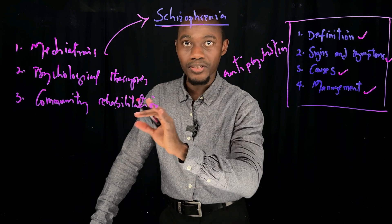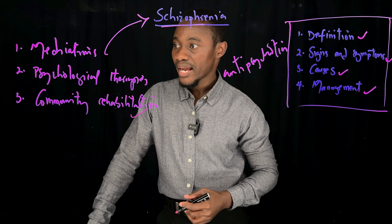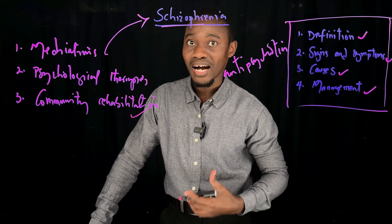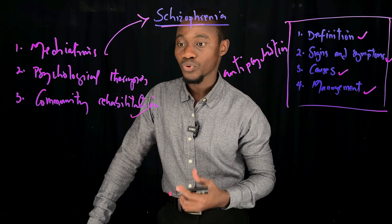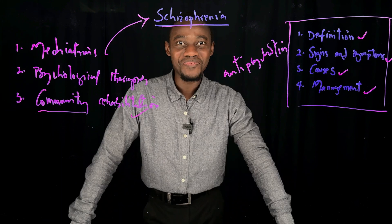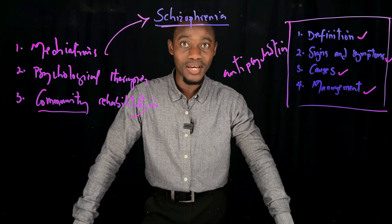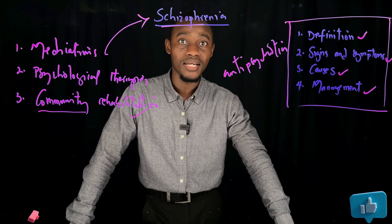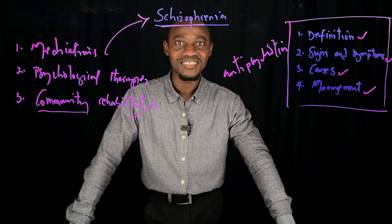Last but not least is community rehabilitation, which involves programs aimed at helping the individual understand the presence of the condition, how it affects their activities of daily living, and helping them make adjustments to reintegrate back into the community. This brings us to the end of today's lecture. If you have any questions, please drop a comment and I will do my best to respond. Please like this video, share with others who will benefit from it, and don't forget to subscribe for more educational videos. This is Masterminds Nation — class has ended.